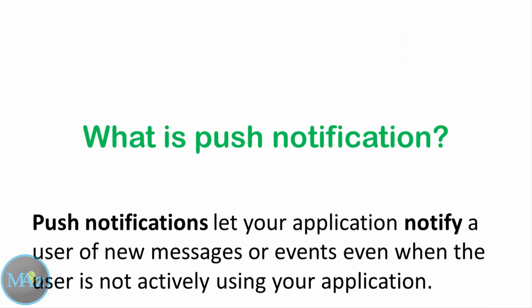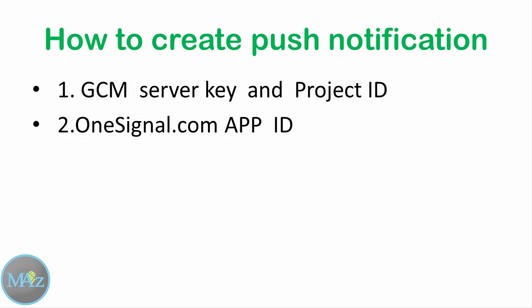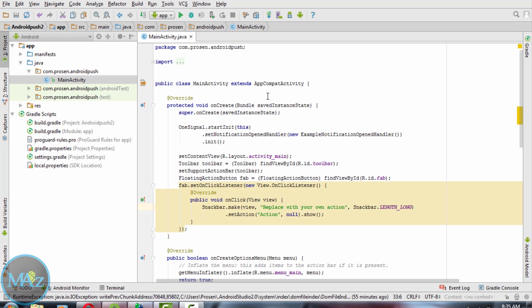There are lots of ways to create push notifications, but I am going to use a GCM server key and project ID. Since parse.com is going to retire, we will use onesignal.com as a back-end service for push notifications. To send push notifications from onesignal.com we need to use the OneSignal app ID.